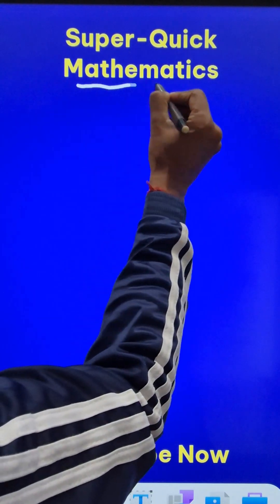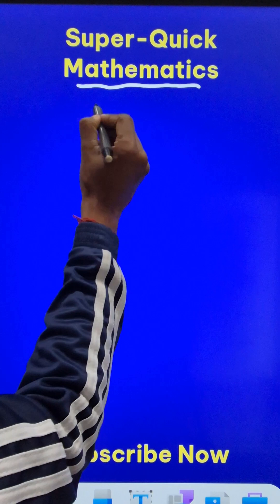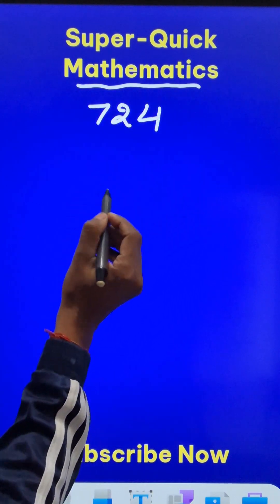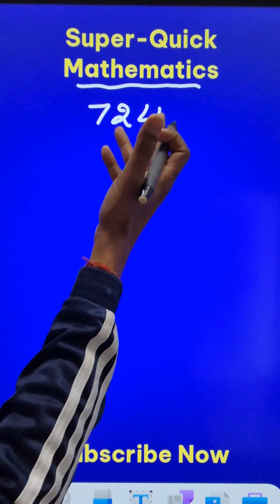Here is a trick to surprise your friends using a mathematics super quick method. Suppose you have a three-digit number like 724. The friend can choose any number, 724 or whatever.